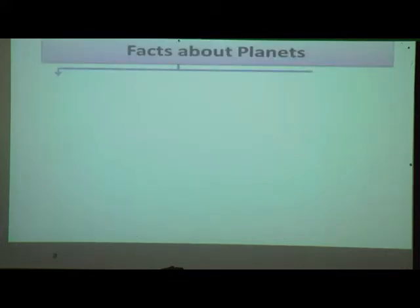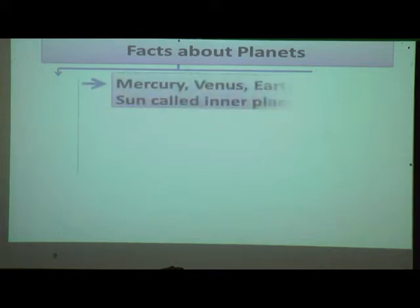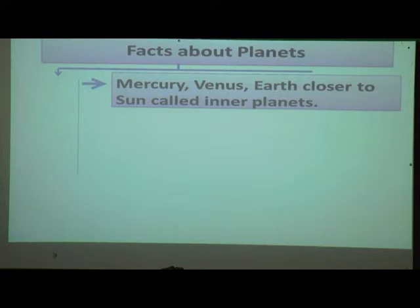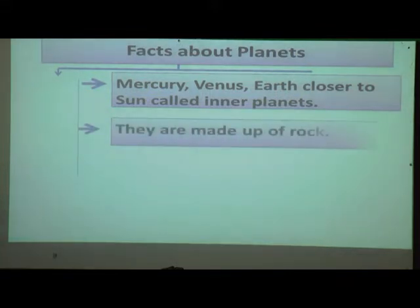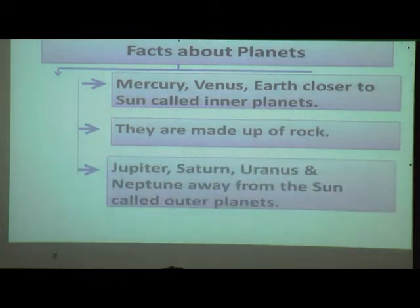Now we will see some facts about the planets. Mercury, Venus, and Earth are closer to the sun and are called inner planets. They are made up of rocks. Jupiter, Saturn, Uranus, and Neptune are away from the sun, so they are called outer planets.